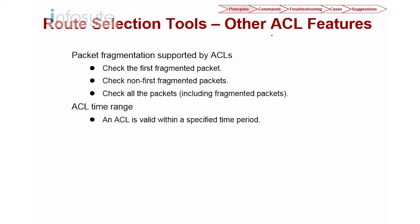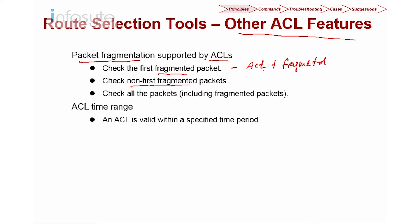Let's look into other ACL features. The first feature is packet fragmentation — packet fragmentation can be supported using ACL. At the end of the ACL rule you specify whether it is a 'fragmented' or 'non-first-fragmented' packet. If the ACL matches the source and destination IP and the packet is also fragmented, then it is a match.